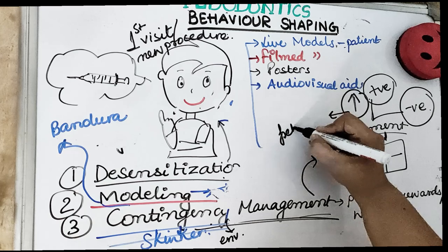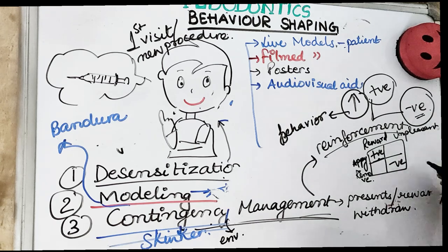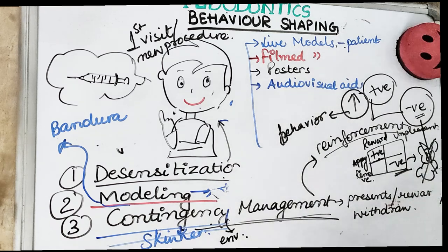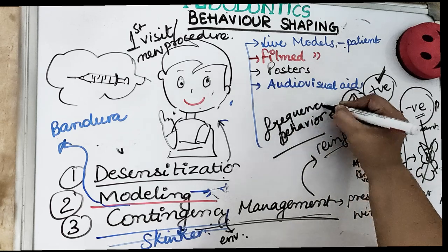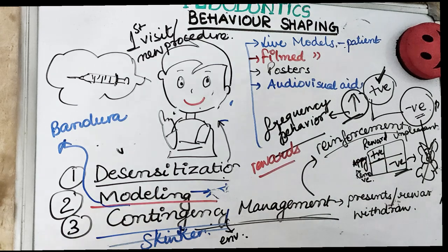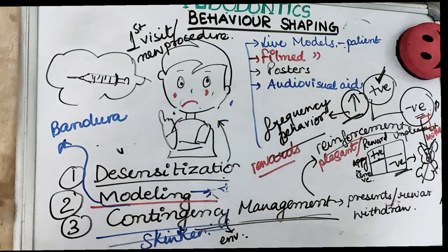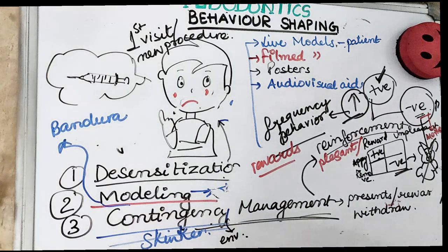Negative reinforcement involves the removal of an unpleasant stimulus following a response — for example, taking a toy back or sending the child's parents outside. A negative reinforcement is the one whose contingent withdrawal increases the frequency of the behavior. So positive reinforcement increases behavior by applying pleasant consequences, while negative reinforcement is usually the termination of an aversive stimulus, such as withdrawing the mother from the clinic.